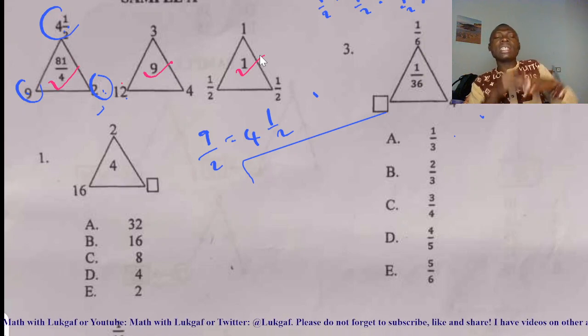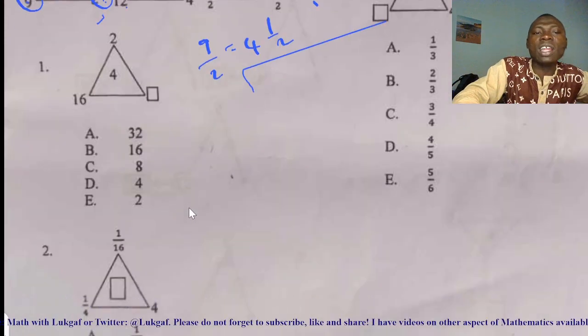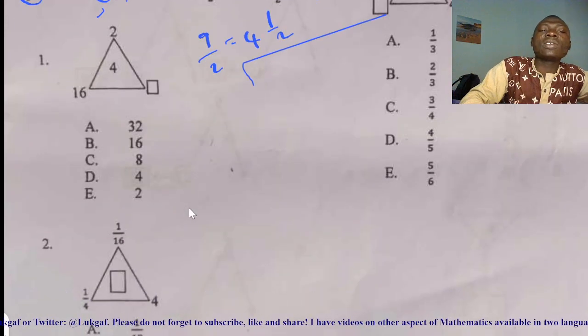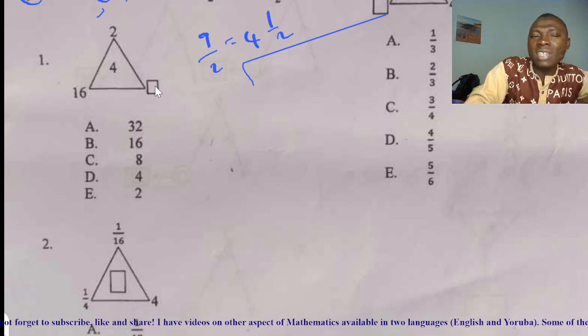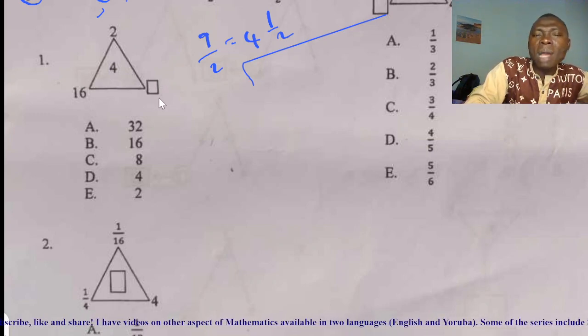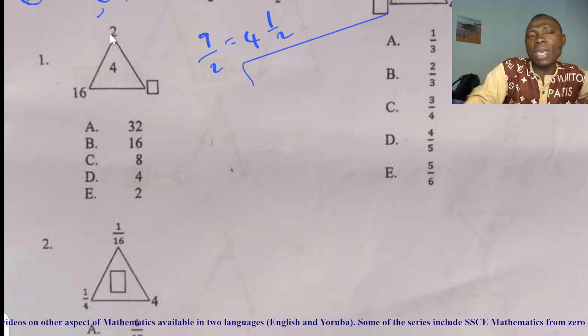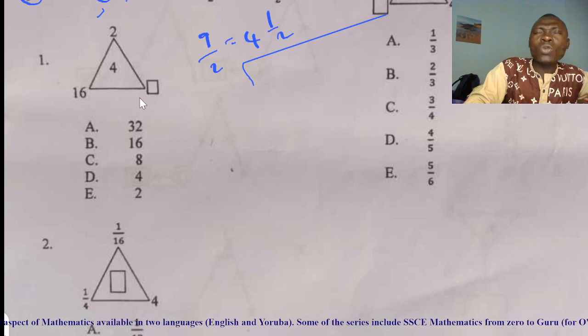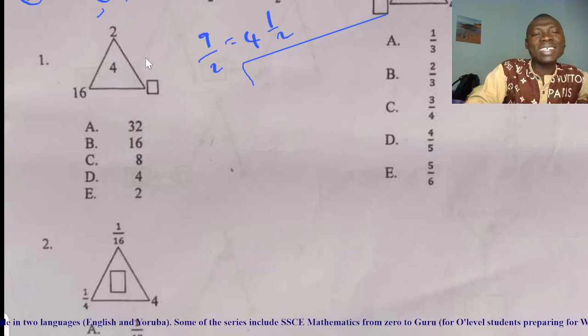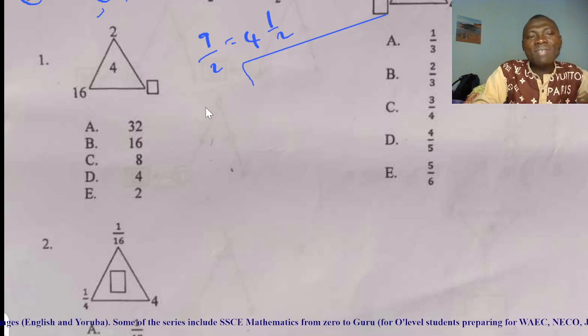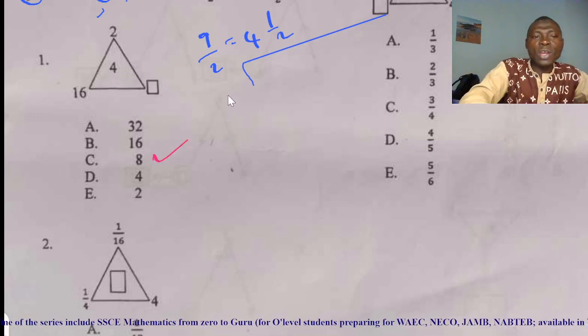Let us move to this question. We have 16 here. You don't need to stress yourself. This is very simple. Don't forget the rule is that when you divide the two numbers at the bottom, it will produce the one at the top. It means what are you going to divide by 16 to give you 2? That is it. Because 32 divided by 16 will give me 2. So you have your answer for free.